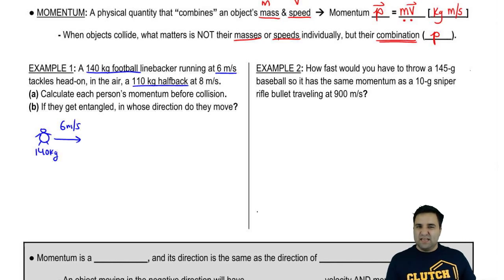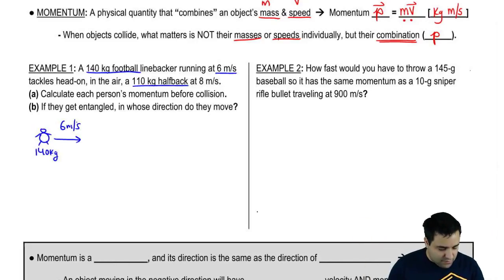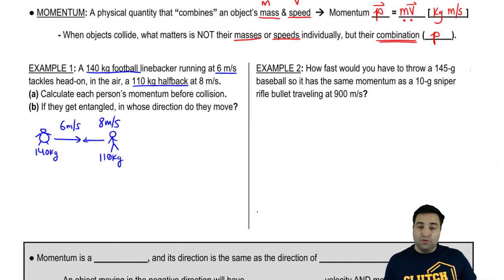The problem, the example doesn't say that he's moving to the right. It just says that they tackle head-on. So I've got to pick that one's going to the right, the other one's going to the left. So I'm just going to arbitrarily say that this one's going to the right. Therefore, the other one, a little bit lighter, so I'm going to draw him a little skinnier, is moving this way with 8 meters per second. And the mass here is 110. Now before I do anything else, let me point this out to you.